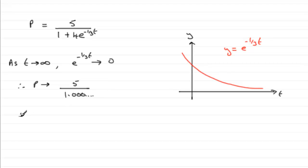So, therefore, what happens is P tends to five, but what we call from below. Never above five, but just slightly smaller than five.